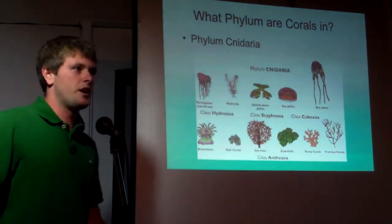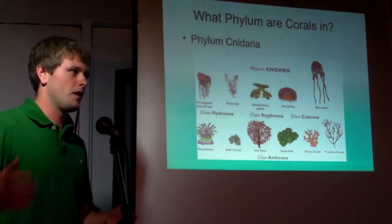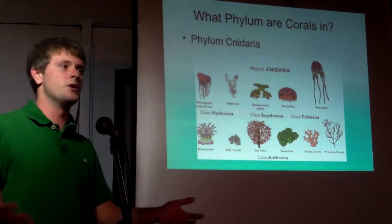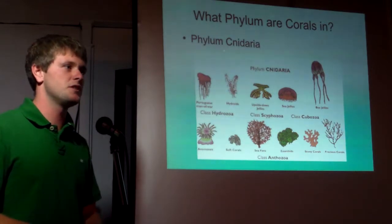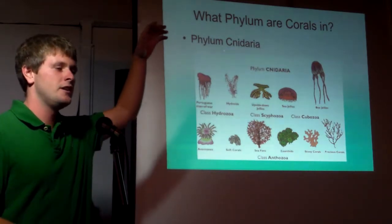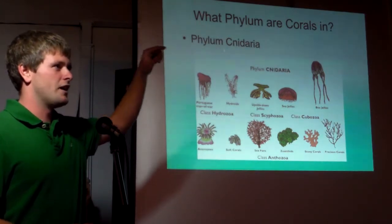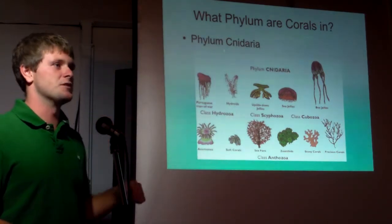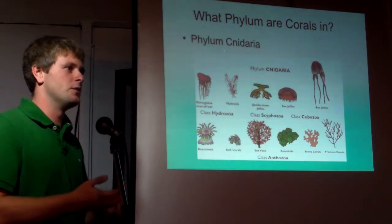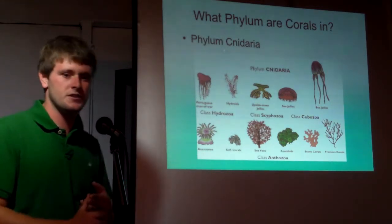When you classify organisms, they have a scientific name. It usually just uses the genus and species, but those are the last two levels in a bigger hierarchy: kingdom, phylum, class, order, family, genus, and species. Kingdom would be like animals, plants, bacteria, fungus, or protists.